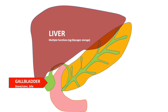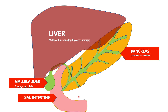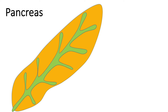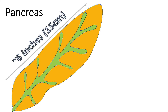The bile gets secreted into the small intestine — specifically the duodenum, the first component of the small intestine. On the other side, we have the pancreas. The ducts here are primarily for the exocrine secretions, which are secreted into the first component of the small intestine. The pancreas is a leaf-shaped organ approximately 15 centimeters or 6 inches in length.